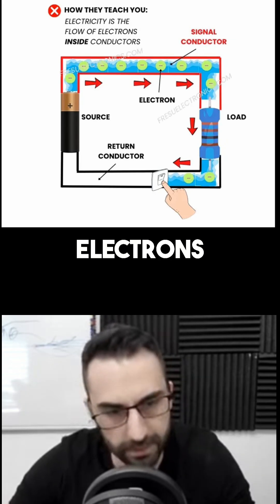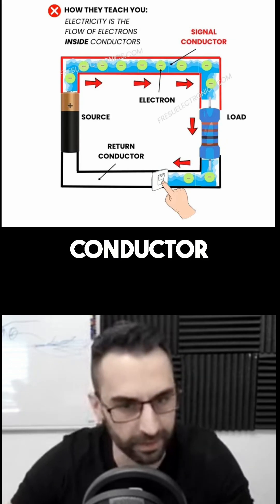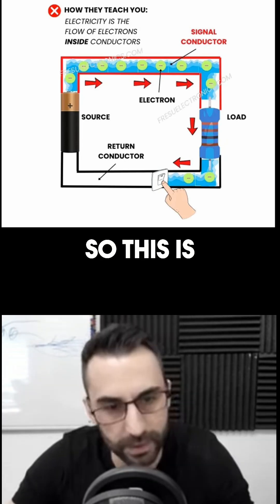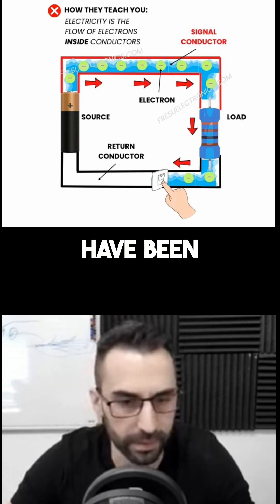We have the source, then we have the electrons flowing inside the conductor. The signal conductor is the one on the top. Once they reach the load, they go back. This is the wrong model that we have been taught.